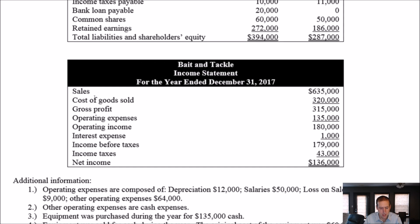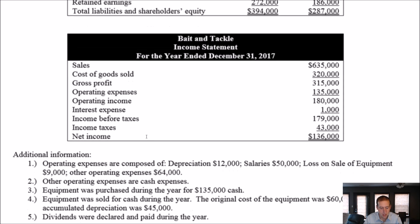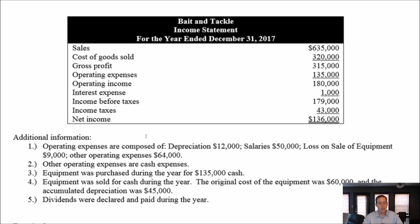On our income statement: sales, cost of goods sold, gross profit, operating expenses, operating income, then interest expense, income before taxes, income tax. They break down the operating expenses — they say operating expenses are composed of depreciation and salaries. They sold some equipment, which is going to be relevant. And they had some other operating expenses of $64,000.